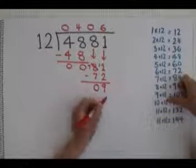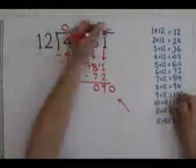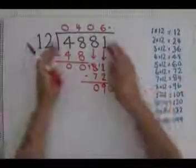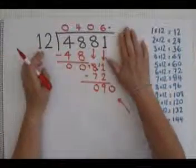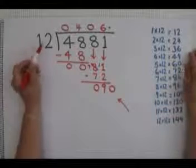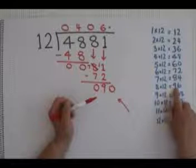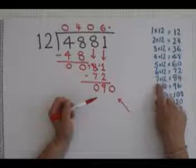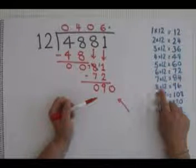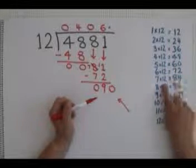And then we can fly in a 0. We are now working beyond the decimal point. We have finished working with our whole number, we are moving on to a decimal answer now. We say to ourselves how many times does 12 fit into 90? Looking at our times table we see that 7 times 12 is 84. 8 times 12 is 96. That's too big. So we have to go for 7 times 12.